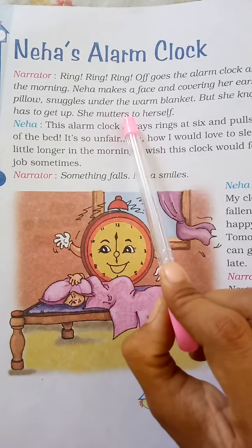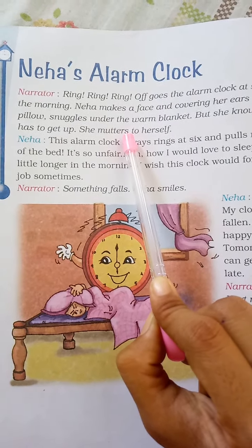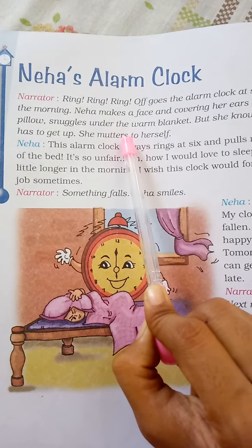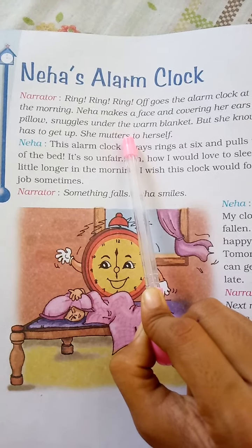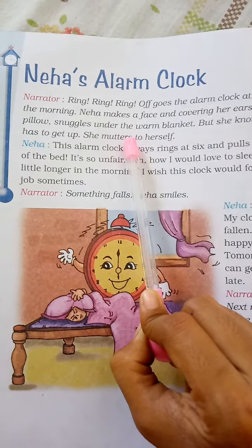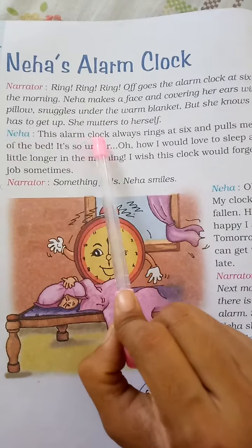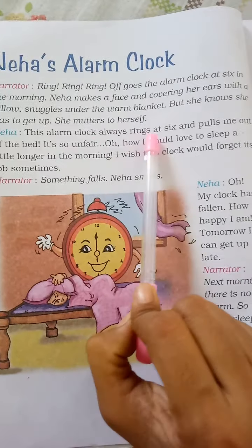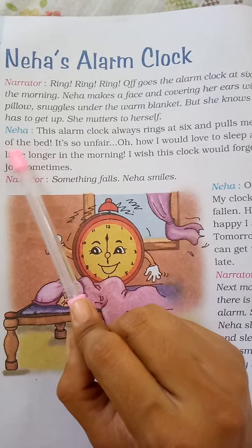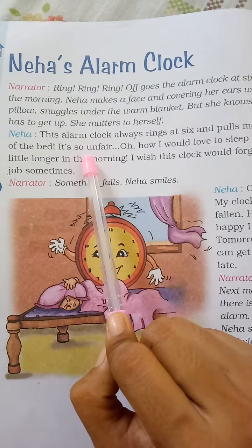She mutters to herself. Mutters means to speak in a low, quiet and often angry voice that is difficult to hear. Neha: 'This alarm clock always rings at 6 and pulls me out of bed. It's so unfair.'